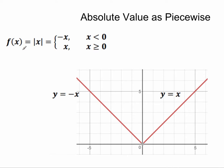So we write this as f(x) = |x| equals, and then we do these brackets with two rows. We say that it equals negative x when x is less than zero, and it equals x when x is greater than or equal to zero.